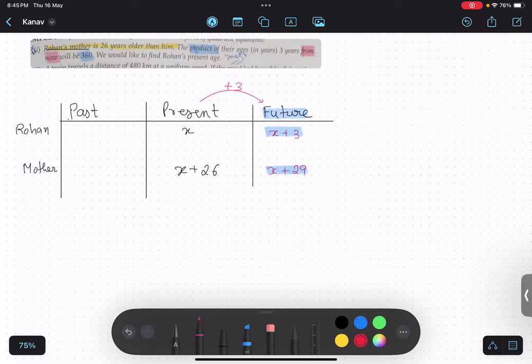So what I am going to do is according to the question: X plus 3 multiplied by X plus 29 equals 360. Not degree. Sorry, 360.